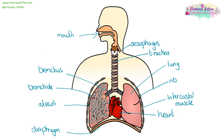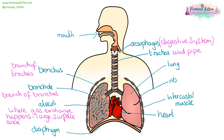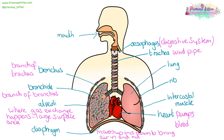Here we have our respiratory system. Air goes in through the mouth or the nose, down into the trachea, which is also known as the windpipe. Then into the bronchus, which is the branch of the trachea. Into the bronchioli, which is a branch of the bronchus. And into little grape or cauliflower-shaped alveoli — this is where gas exchange happens, and they have an incredibly large surface area. Your diaphragm moves up and down to bring air in and out. The heart pumps blood around the body. The intercostal muscles allow the rib cage to expand. And the ribs protect the lungs.